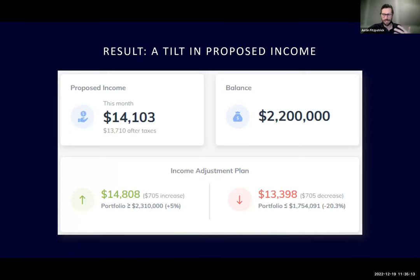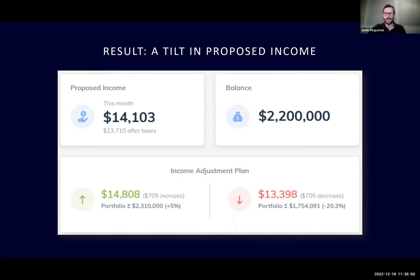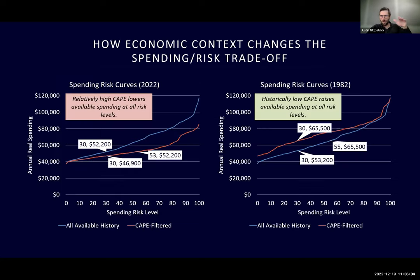Sometimes when people come to Income Lab and we talk about economic context, they think maybe there's something built into the software that says explicitly, if CAPE is 40 then spend this, if CAPE is 6 then spend this. There's not — there's no explicit formula that derives proposed income from economic indicators like a regression. The reason we don't do that is as soon as you write down that formula, you're wrong. The other problem is it doesn't acknowledge that there's actually a curve where you can spend more, you just have to accept more risk. We don't want a formula that spits out exactly what you can spend. We want something that always gives you options — a range of options — so that moving the income setting slider always gives you those options.